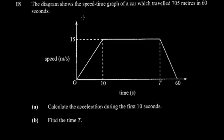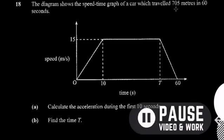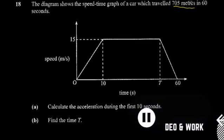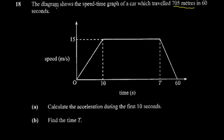Question 18: the diagram shows the speed-time graph of a car which traveled. You're told the distance here. It's always good practice to get a sense of how this information relates to the travel graph. The total distance would be the area under the curve for a speed-time or velocity-time graph. So I already have a picture of how it's supposed to look — it's for the full 60 seconds.